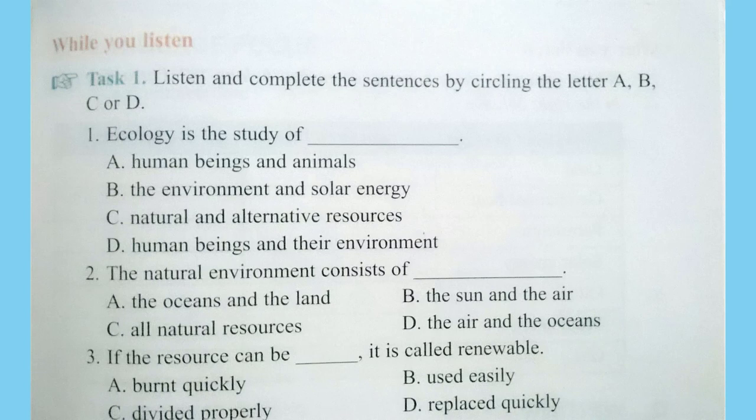The amount of solar energy that reaches the Earth depends on the atmosphere. If the atmosphere is polluted, the solar energy that reaches the Earth may be dangerous. If life is going to continue, the air must contain the correct amount of nitrogen, oxygen, carbon dioxide, and other gases. If humans continue to pollute the air, it will not contain the correct amounts of these gases.